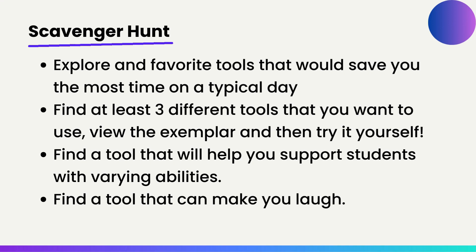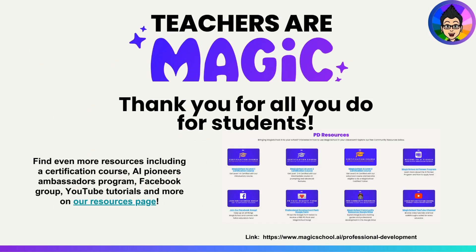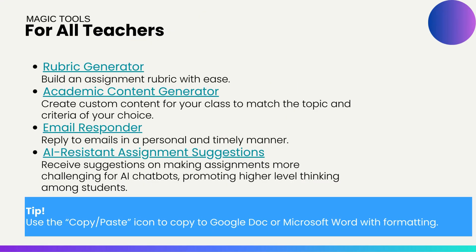Here's an excellent opportunity for you to explore on your own. There's a scavenger hunt challenging you to find favorite tools that will help you save time and that you would most likely use in a typical day. Try to find three different tools you want to use and look at the exemplar to see if it's something you'd like to use in your classroom. Find a tool that will support students and their varying abilities for differentiated instruction, and see if there's even a tool that will make you laugh. There are also three different certifications — level one, level two, and level three — for a deeper dive into Magic School AI.